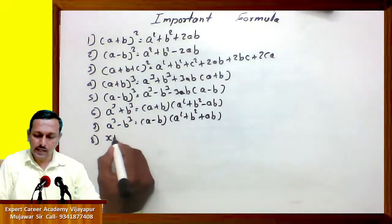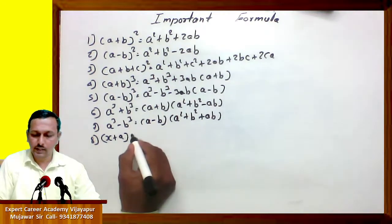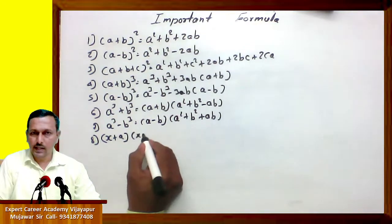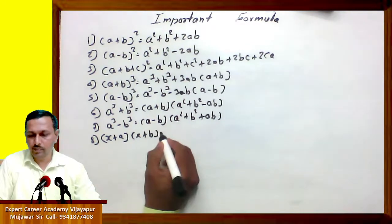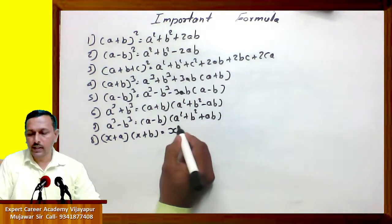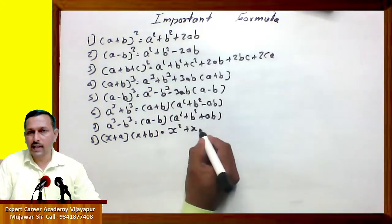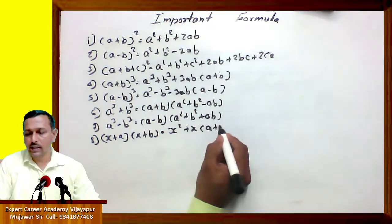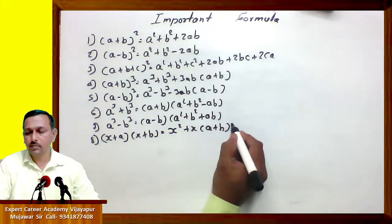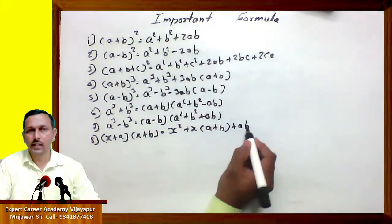(x plus a) into (x plus b) equals x square plus x into bracket (a plus b) plus ab.